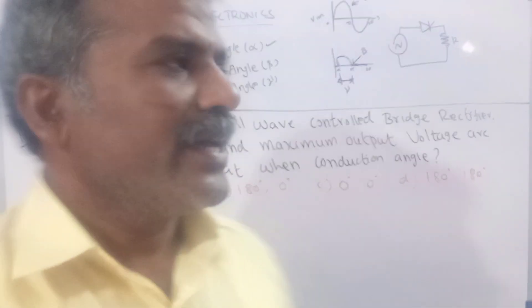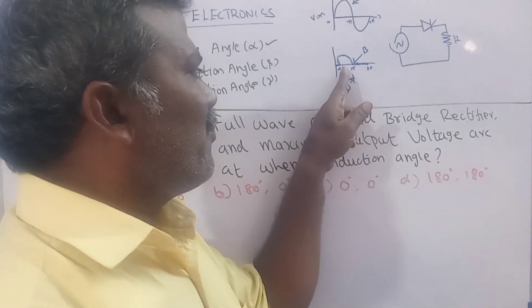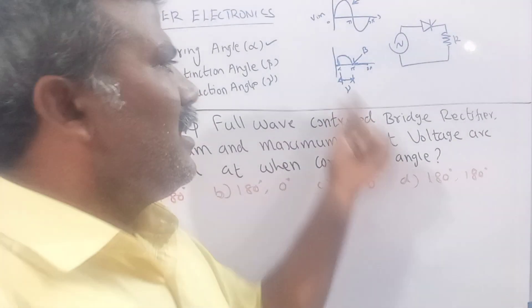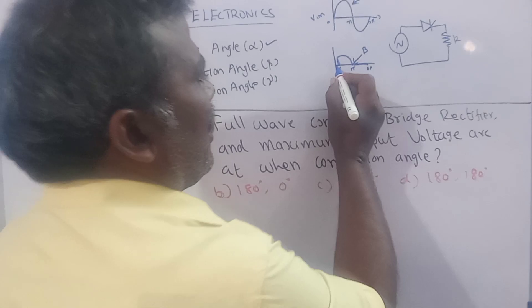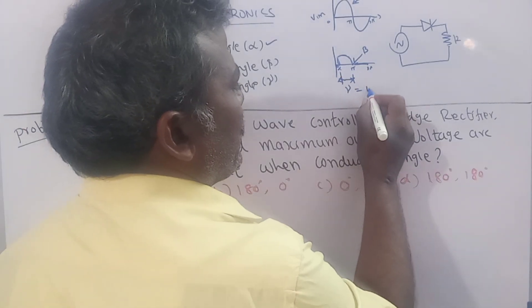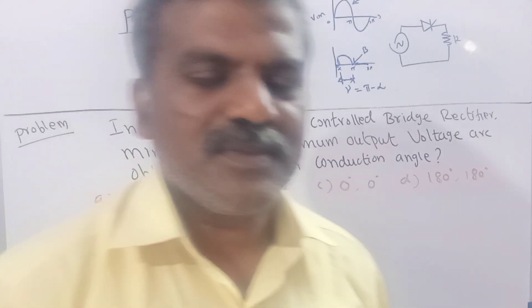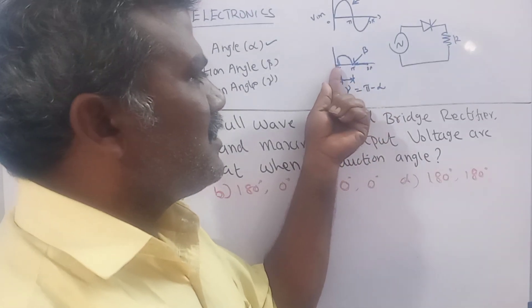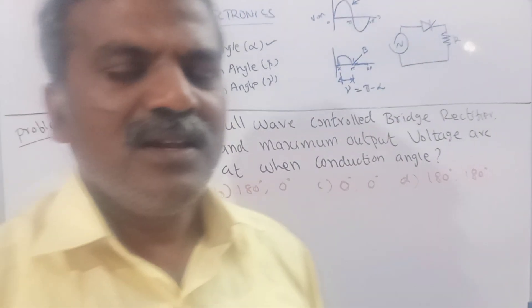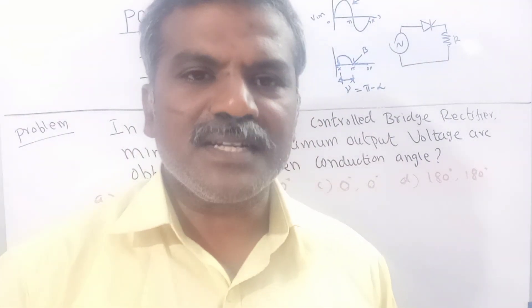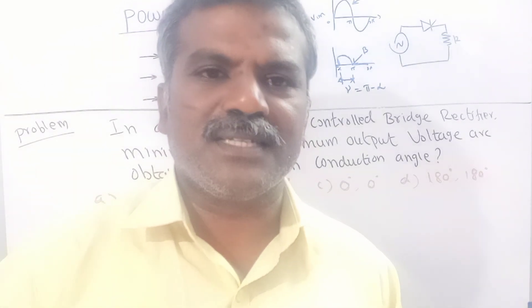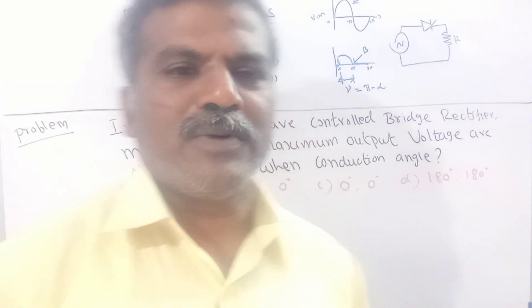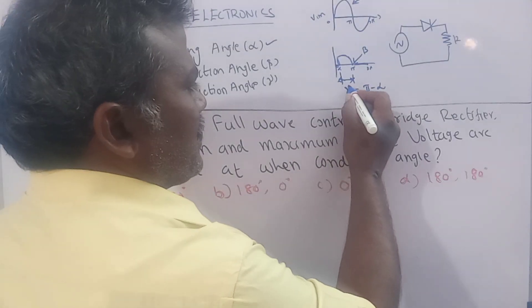The conduction covers 0 to 180 degrees — that is the half cycle. Gamma equals beta minus alpha. So the total conduction over the half cycle: beta minus alpha equals gamma, the conduction angle.